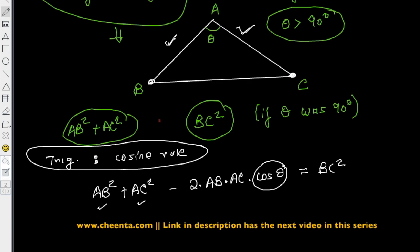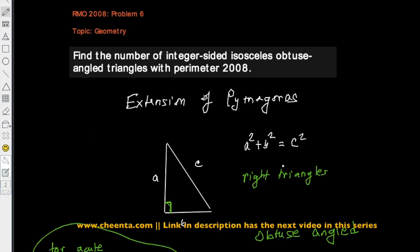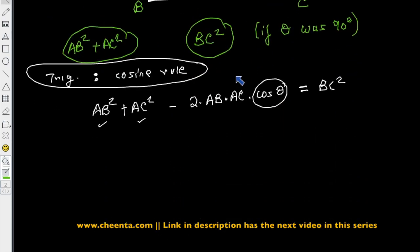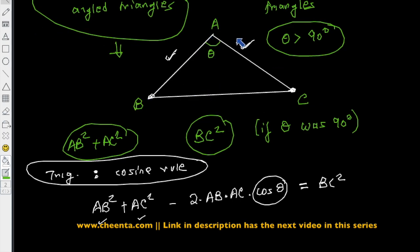For now, let's take this formula as given — we can discuss its derivation in a later lecture. We want to apply it in a very special case. The problem asks us to find the number of integer-sided isosceles obtuse angle triangles with perimeter 2008. For the isosceles obtuse triangle ABC, let AB = AC = x and BC = y.